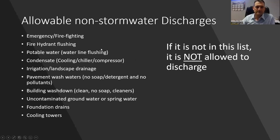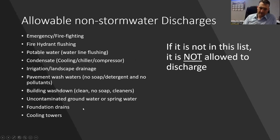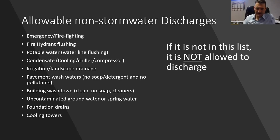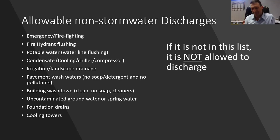Other allowable non-stormwater discharges include emergencies, potable water, and landscape irrigation — very similar to the construction general permit — but it also includes cooling tower water. If it's not in this list, it's not allowed to be discharged at all. So process water such as wash water — like washing concrete trucks at a batch plant — that water is not allowed to be discharged.